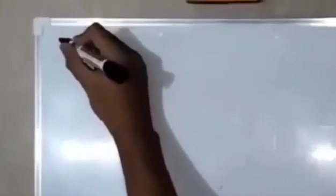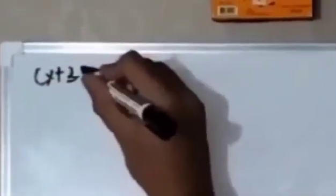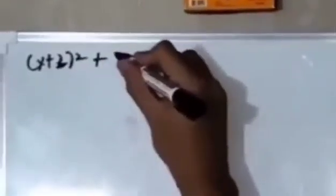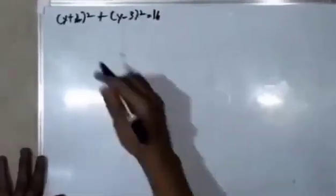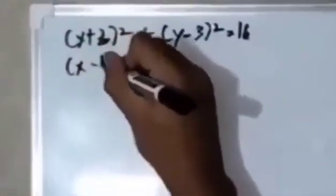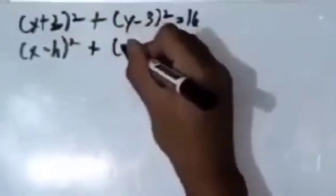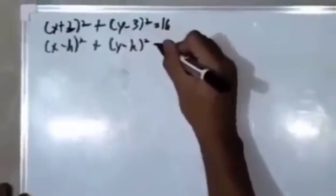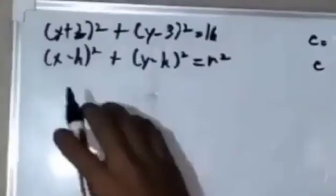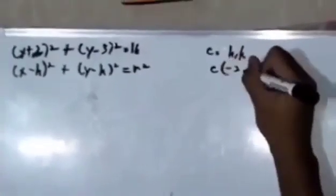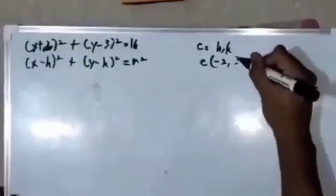Transforming standard form to general form. Let's have an example: x plus 2 squared plus y minus 3 squared is equal to 16. Since x minus h squared plus y minus k squared equals r squared and the center is h comma k, our center is negative 2 and positive 3.